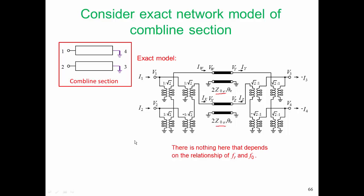So there is nothing here that depends on the relationship of FR and F0. This is a broadband match. And if we wanted to simulate a pair of coupled lines in a simulator, this is the circuit that we can use. And there are similar circuits to this when we have many lines that are in parallel. And we have a direct model.